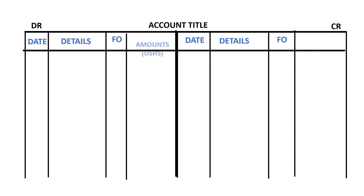Then we have the amounts column — one on the debit side and one on the credit side. The amounts column is where we write the actual figure of the transaction. For example, if you go and buy a hen and it costs you 10,000 shillings, the figure 10,000 is written in the amounts column. At the top of the amounts column, we normally put the unit of currency in brackets — so if the amounts are in dollars, we write that at the top so that we do not have to keep writing the currency units repetitively throughout the column.